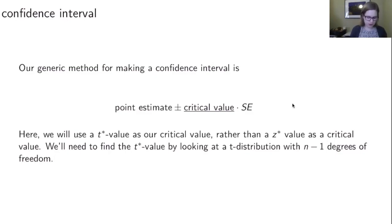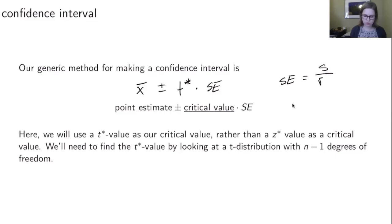In this case, our point estimate is x bar plus or minus, and our critical value is a t* value from the Student's t distribution. Then we've got our standard error, where we're estimating the standard error to be s over the square root of n. We'll need to find a critical value for t*. It's not something you can just memorize like with the normal distribution — we have to look at a t distribution with a particular number of degrees of freedom, in this case n minus one.